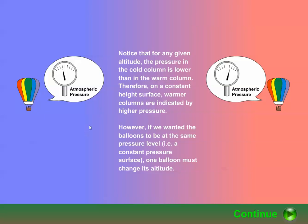In other words, pressure decreases faster with increasing height in a cold air column than it does in a warm air column. So at any given altitude, the balloon in the warm air column has a higher pressure than the balloon in the cold air column.